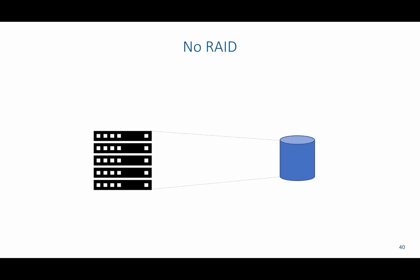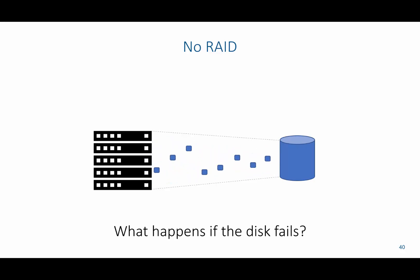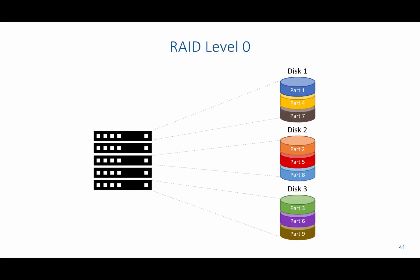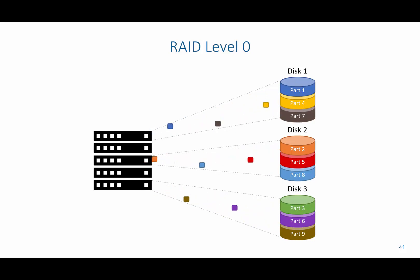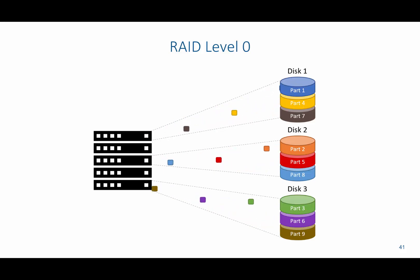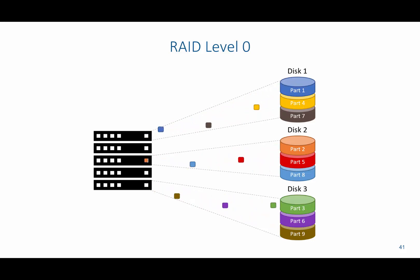One way industries ensure data is constantly backed up with no loss is using RAID arrays. First, with no RAID at all, we essentially have a server backed up to a single disk. If that disk fails, all the backed-up data is completely lost because there is no redundancy. RAID level 0 introduces the concept of striping — we take the bits of each file and stripe them to different disks, distributing nine parts across each disk so they can be reconstructed. The problem is that if one disk fails, the file becomes corrupt because some parts are missing.